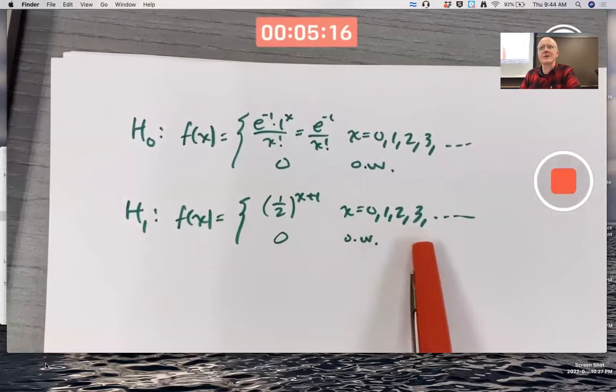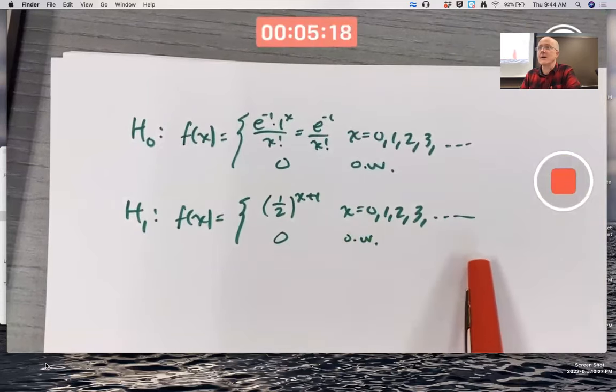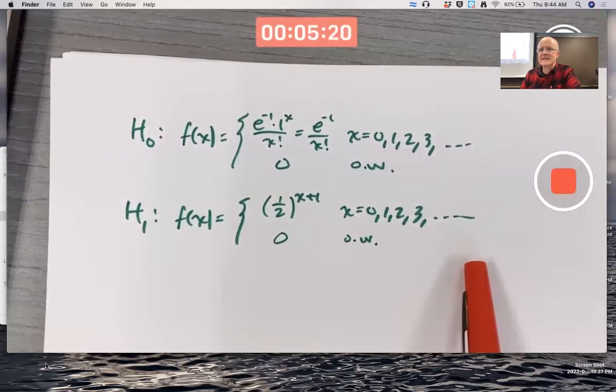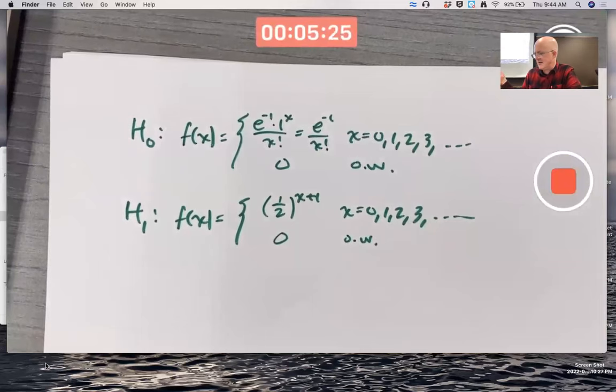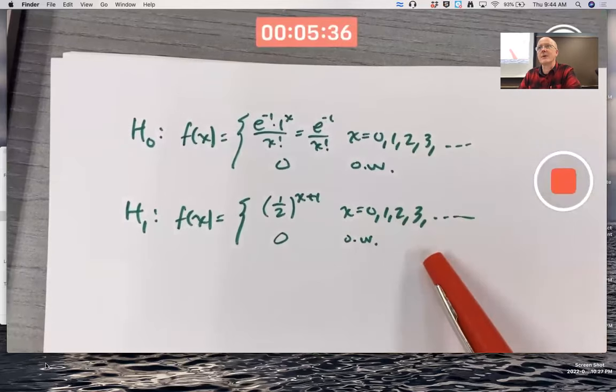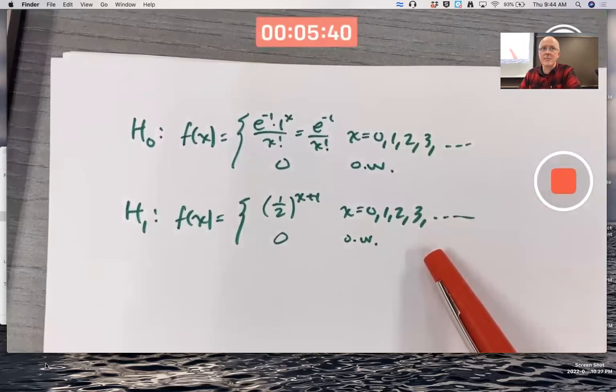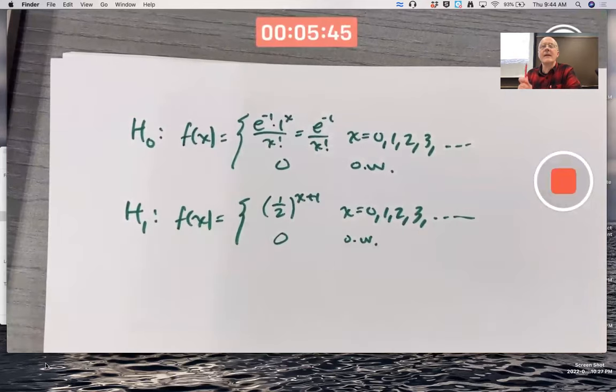What would the critical region be here? The possible values of X are discrete, 0, 1, 2, 3, etc. But this is clearly, it's hard to say whether this is a right-tailed test or a left-tailed test or something else. I don't know what to call it. Right? It's unlike anything we've ever done before. How do you decide what values of X would lead to rejecting this null hypothesis in favor of the alternative? And if you did reject the null incorrectly, what's the probability of making a type 1 error?